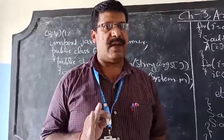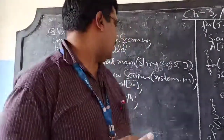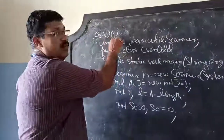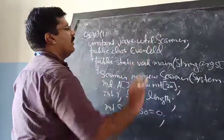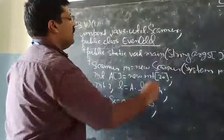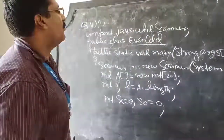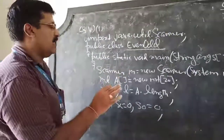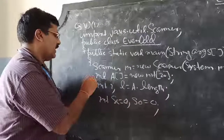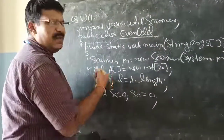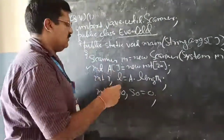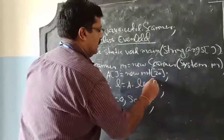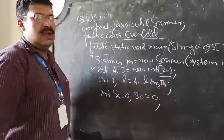So we have to accept 20 numbers in the array. Let us see the program for question 5.1. We begin with import java.util.Scanner, then the class declaration: public class EvenOdd. Inside the main method, we create the Scanner object, and then declare the array: int a[] = new int[20].